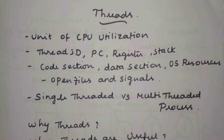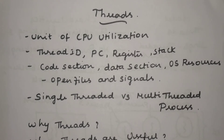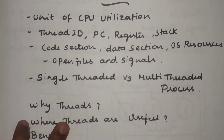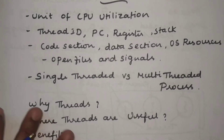In a traditional operating system, a process consists of only one thread — that is a single-threaded process. But in a modern operating system, we are actually working with a multi-threaded environment, which means for a particular process we may have many more threads. We will discuss the drawbacks of single-threaded environments and how multi-threading overcomes them. Before that, we know that a thread is a basic unit of CPU utilization.